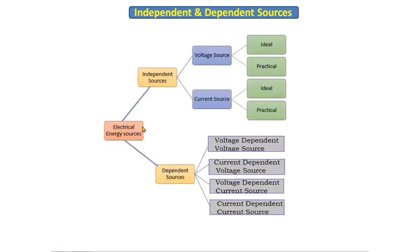Hello everyone, today we are going to discuss independent and dependent sources. Electrical energy sources are of two types: independent sources and dependent sources. Independent sources are classified into independent voltage source and independent current source. Independent voltage sources have two types: ideal and practical. Similarly, current sources are also ideal or practical. Dependent sources have four types: voltage dependent voltage source, current dependent voltage source, voltage dependent current source, and current dependent current source.